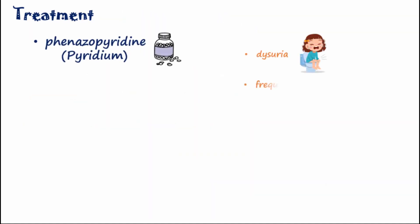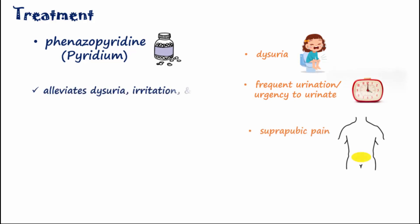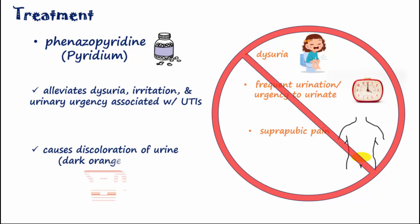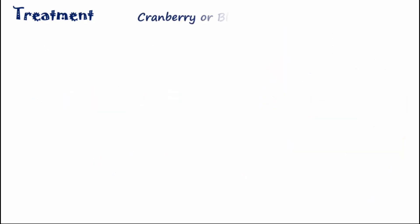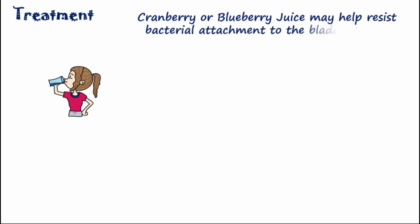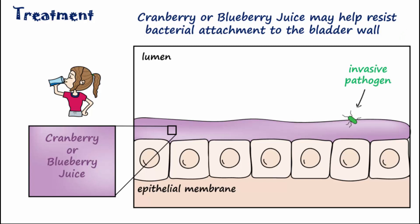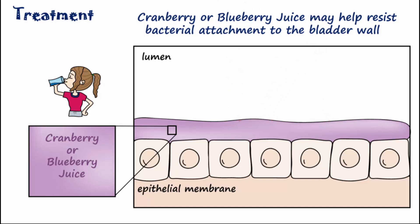Phenazopyridine helps alleviate the dysuria, urgency, and irritation associated with UTIs. Phenazopyridine often causes a discoloration of urine, which may appear dark orange or reddish. There is some evidence that cranberry or blueberry juice may help resist bacterial attachment to the bladder wall, but there is no clear evidence that these will prevent or cure a UTI if a person is at high risk.